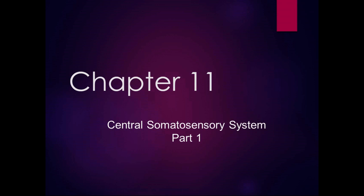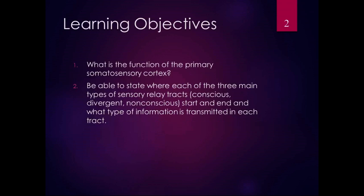The third part of the sensation experience is where it gets to the cerebral cortex, and the cerebral cortex decides: what is that? We're going to talk about that in a later chapter when we're talking about the cerebral cortex — what does the cerebral cortex do with that information? The learning objectives for this part of Chapter 11: you should know what is the function of the primary somatosensory cortex.